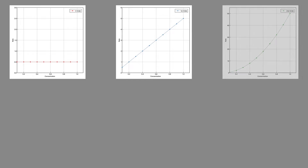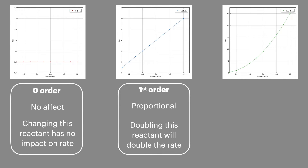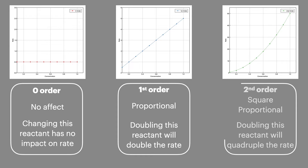Starting with a quick recap of what the orders of reaction assigned to each reactant show us. The order of a reactant shows us how changing that reactant will change the rate of reaction, or the initial rate of reaction to be more correct. Changing the concentration of a zero order reactant will have no impact on the rate. Changing a first order reactant will have a proportional impact — if you double the concentration you will double the rate. And changing a second order reactant will have a square proportional impact, so if you double it you will quadruple the rate.